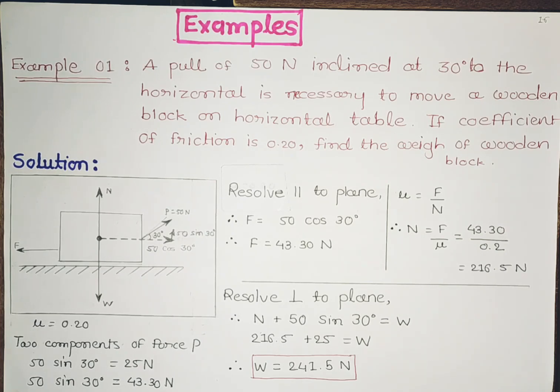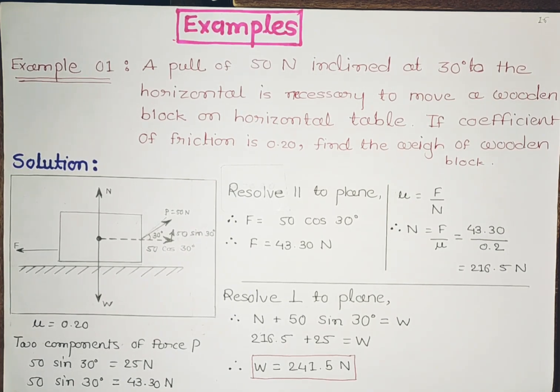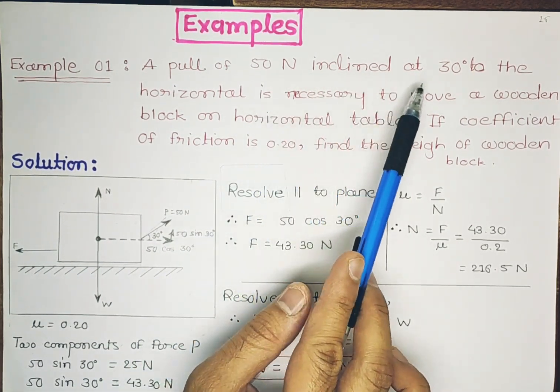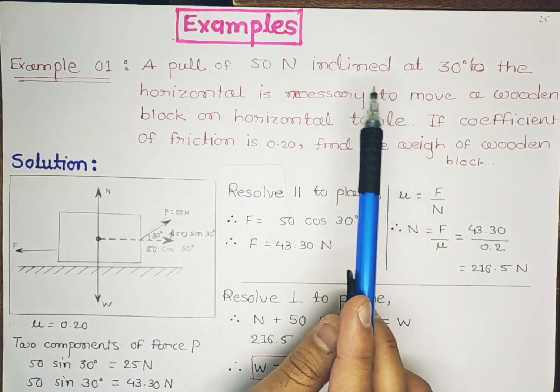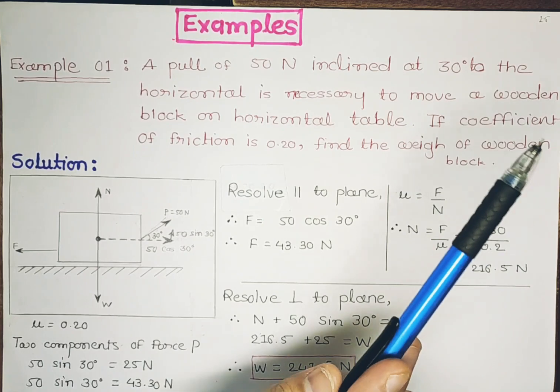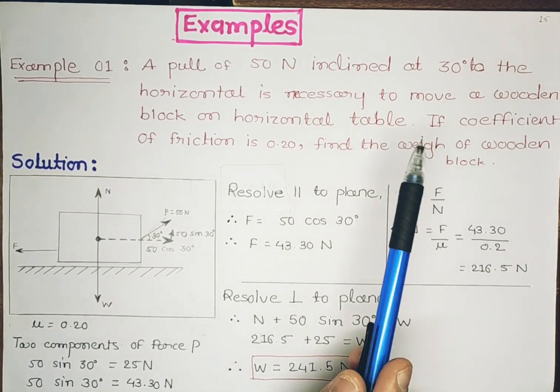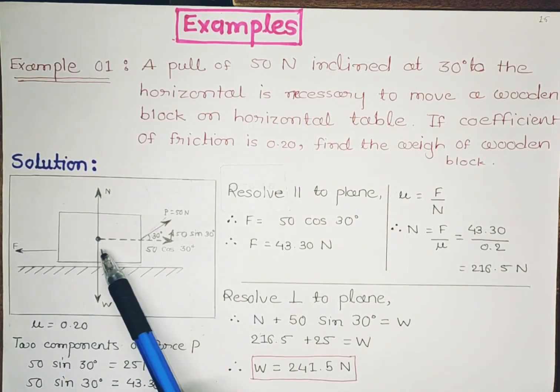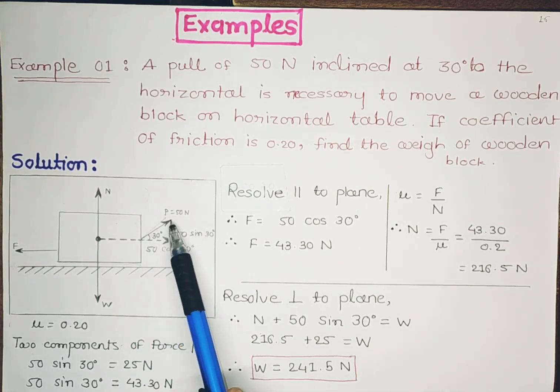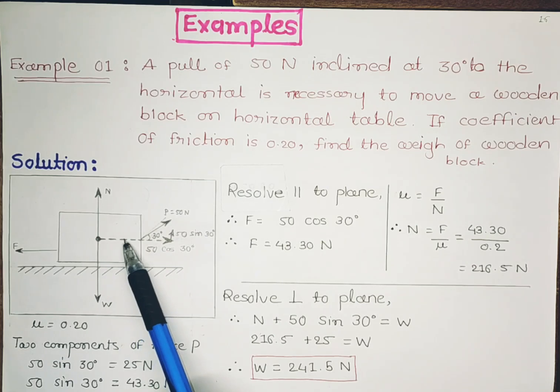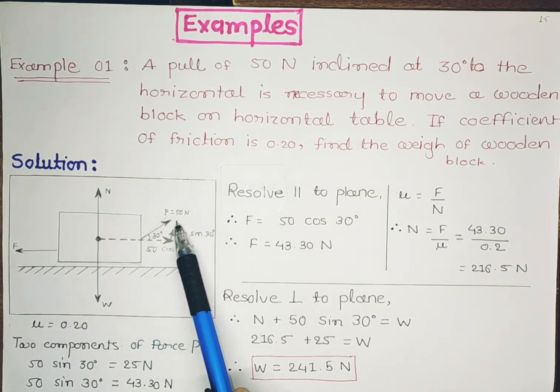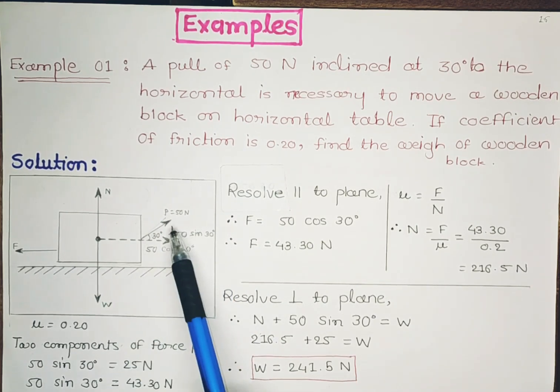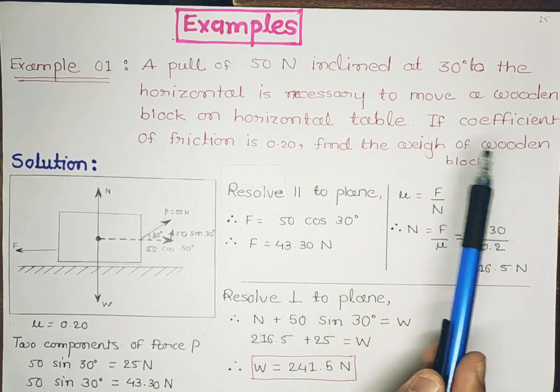The question is: a pull of 50 Newton inclined at 30 degrees to the horizontal is necessary to move a wooden block. So if we consider a box, a pull of 50 Newton is at 30 degree angle to the horizontal. This dotted line is considered as horizontal and a 30 degree inclination pull is applied on this box.